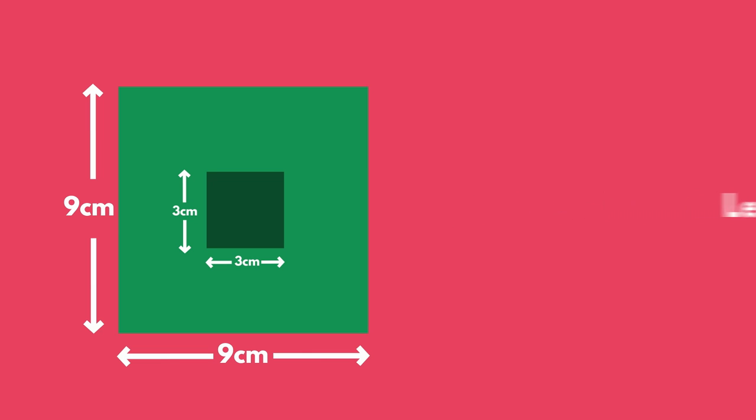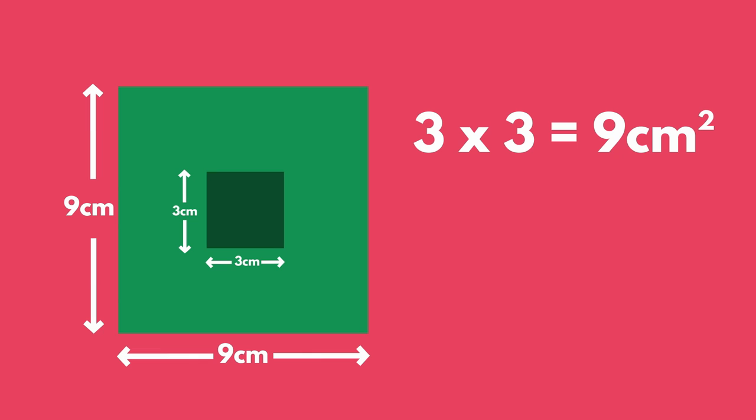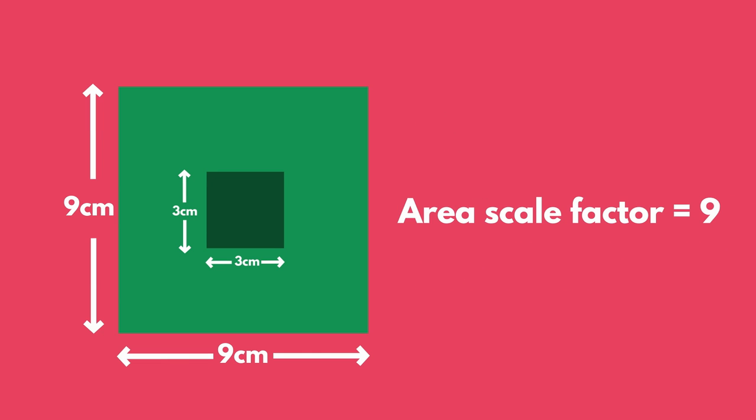The area of the smaller square is 9 square centimeters. The area of the larger square is 81 square centimeters. The area of the larger square is 9 times larger than the area of the smaller square. The area scale factor of these two similar shapes is 9. This is the length scale factor squared.